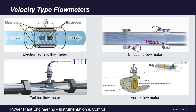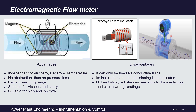Electromagnetic flow meters are based on Faraday's law of electromagnetic induction. Due to conductive fluid flowing through the pipeline, an induced EMF is generated, and this change in induced EMF is calibrated as the fluid flow rate. These are suitable for viscous and slurry fluids. The disadvantage is that they are useful only for conductive fluids, and installation and commissioning is complicated. The best feature is no flow obstruction and no pressure loss.